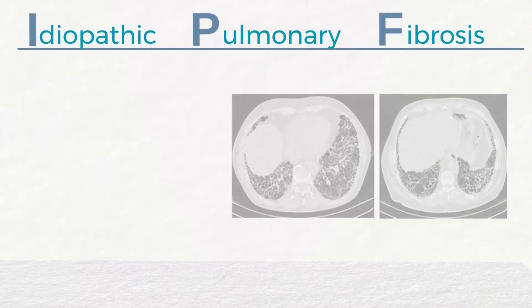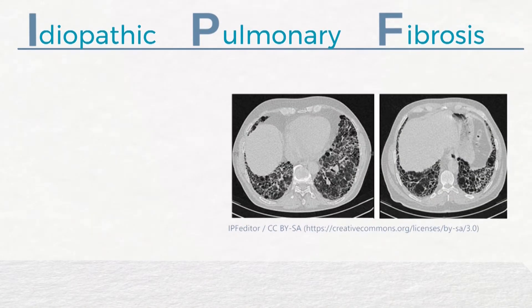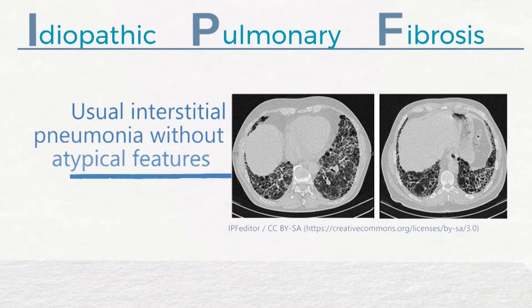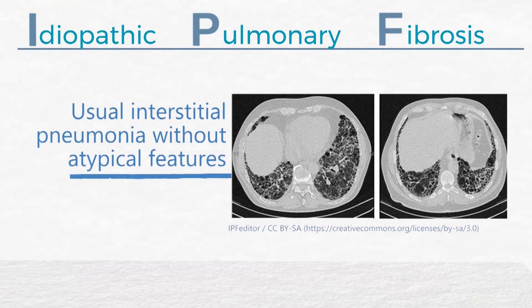Per Joint Society Guidelines, a diagnosis of IPF, or idiopathic pulmonary fibrosis, can be made with a radiographic pattern of usual interstitial pneumonia without atypical features, along with absence of history or exam findings to suggest an alternate diagnosis.